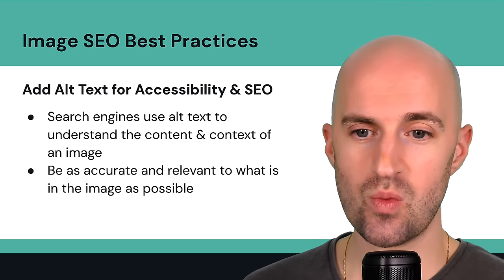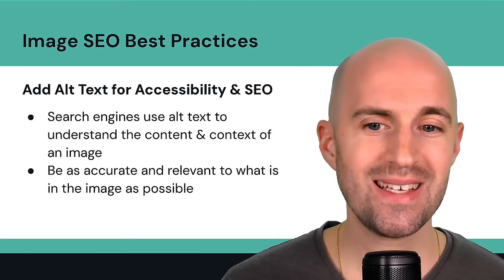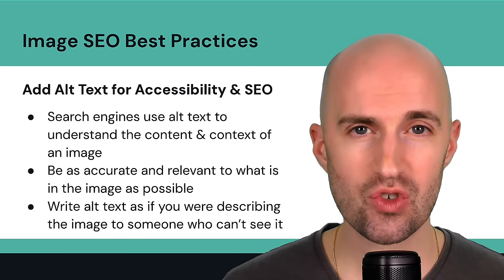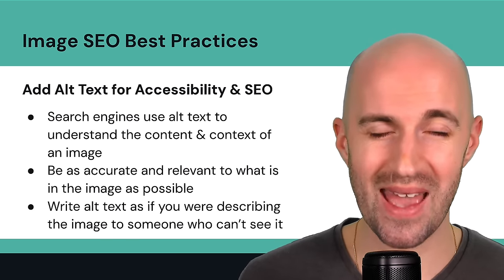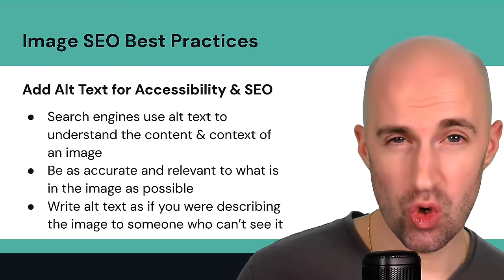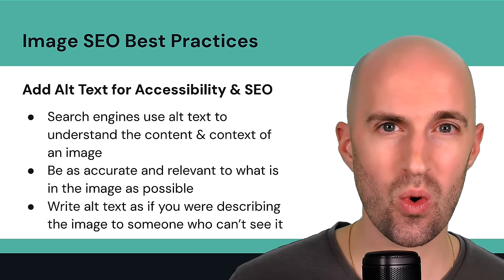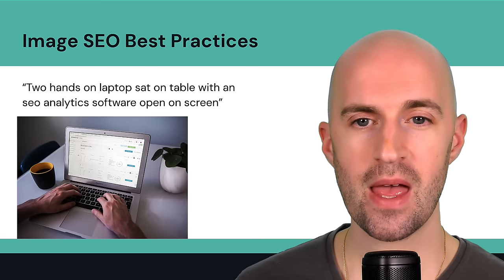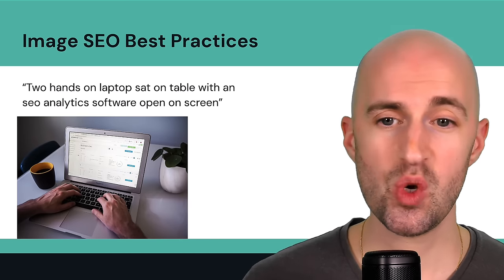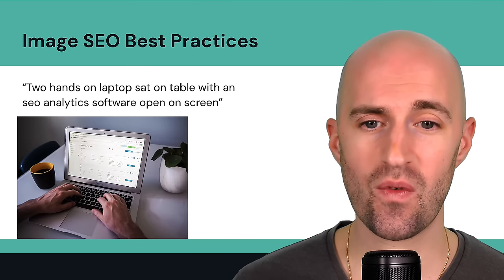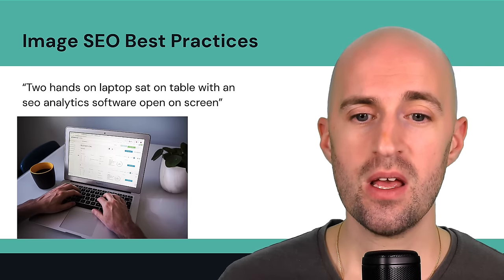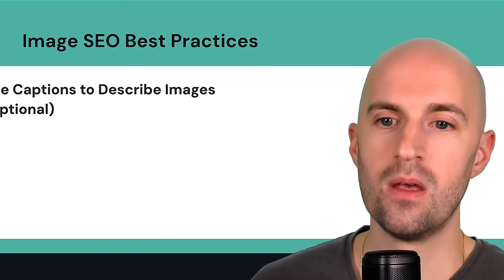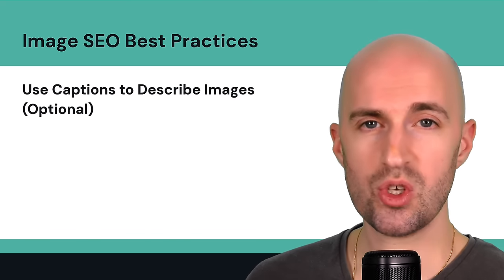Search engines also use alt text to understand the content and context of an image, so it's equally important for SEO. Try to be as accurate and relevant to what's in the image as possible — write alt text as if you're describing the image to someone who can't see it. Be descriptive but not excessively long — a long sentence or short paragraph works well. For example, for an image of a laptop with SEO analytics software open, the alt text could be: 'two hands on laptop sat on table with an SEO analytics software open on screen.'